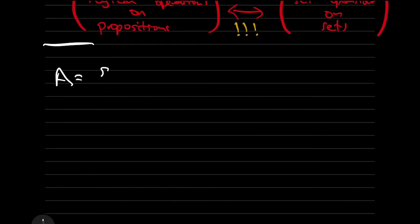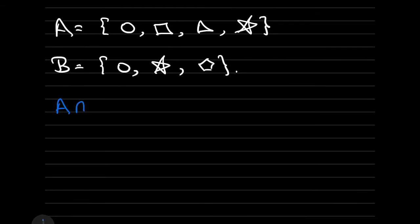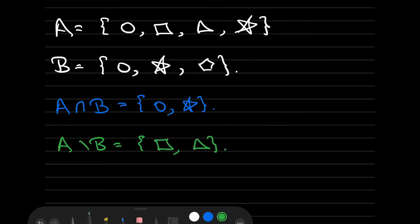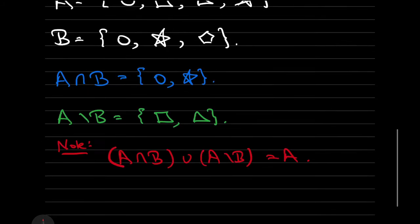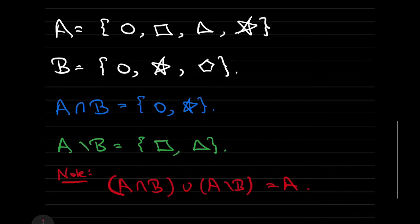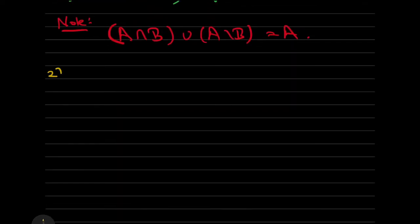Okay, here's a few examples. Let's let A be the set that contains circle, square, triangle, star. And B is the set that contains circle, star, pentagon. Then A intersect B is circle, star. A minus B is square, triangle. Now notice if I take the union of A intersect B and A minus B, I recover the set A. Is this always true?